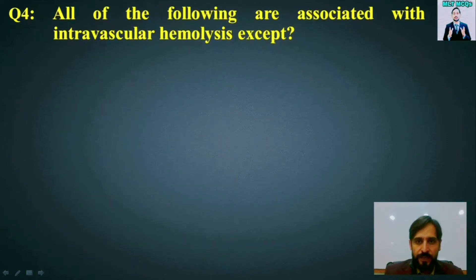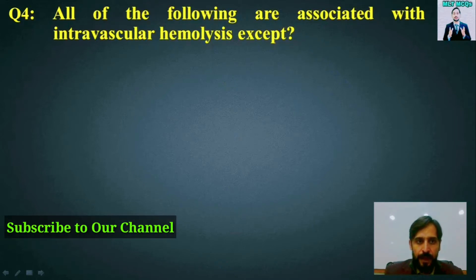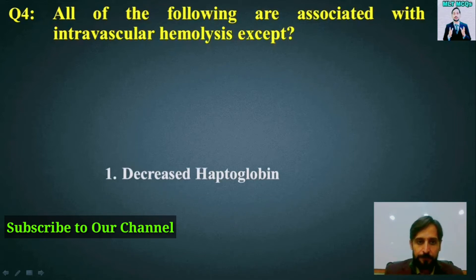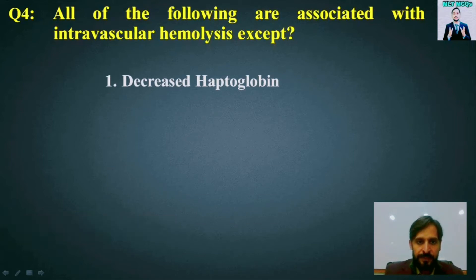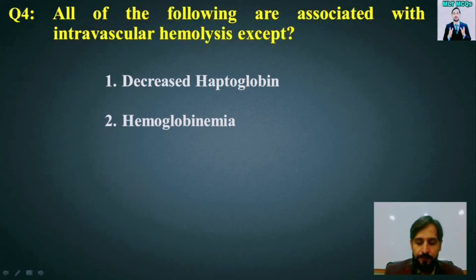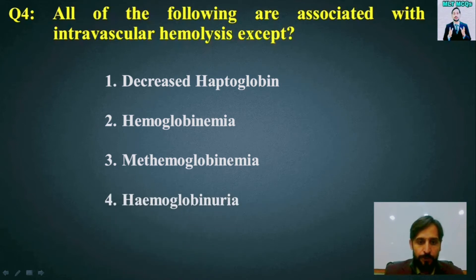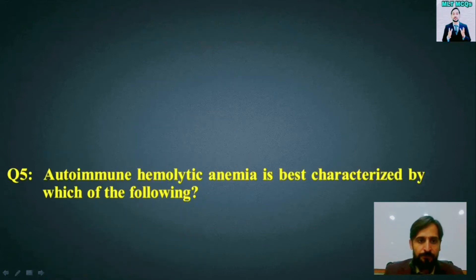MCQ number 4: All of the following are associated with intravascular hemolysis except. Options are: decreased haptoglobin, hemoglobinemia, methemoglobinemia, or hemoglobinuria. The right answer is option number 3 — methemoglobinemia.